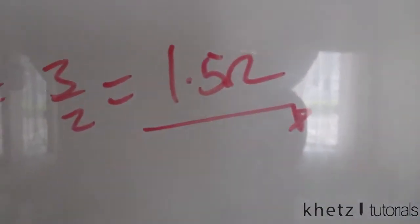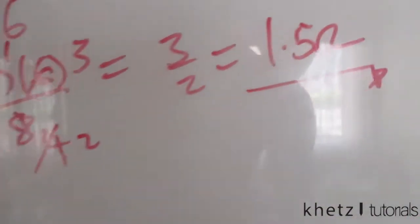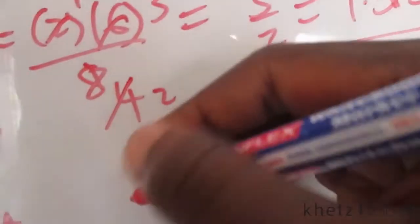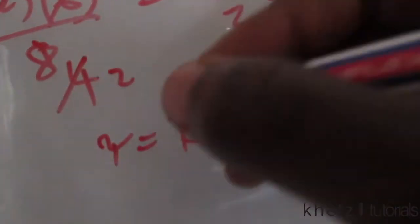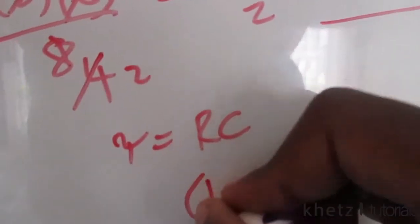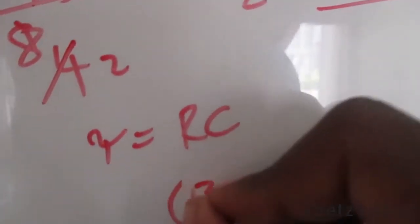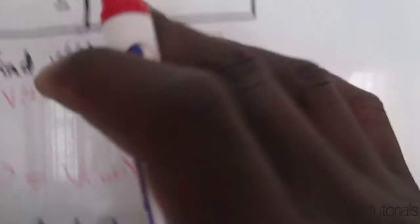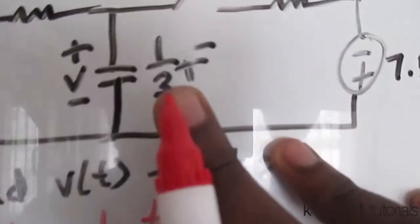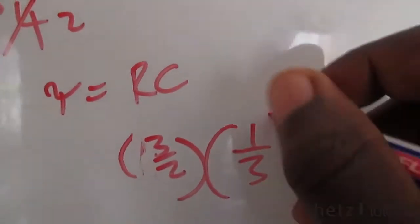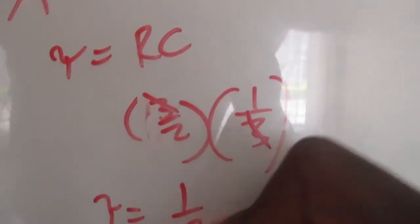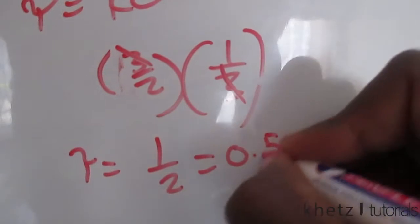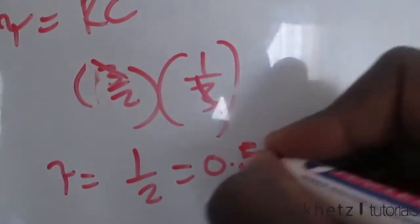For an RC circuit the time constant τ = RC. Our R is 1.5 ohms (which equals 3/2), and the capacitor value given in the question is 1/3 farads. These cancel to give τ = (3/2) × (1/3) = 1/2 = 0.5 seconds.